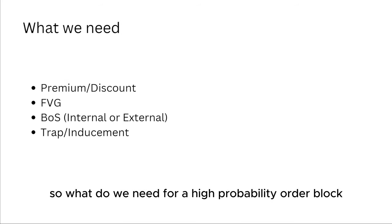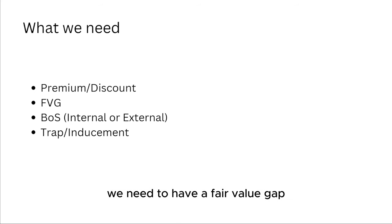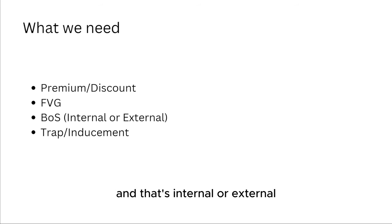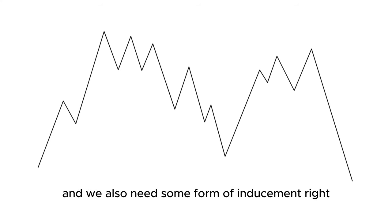So what do we need for a high probability order block? First off, we need to be in a premium or discount zone. We need to have a fair value gap. We need to have a break of structure — that's internal or external. And we also need some form of inducement.